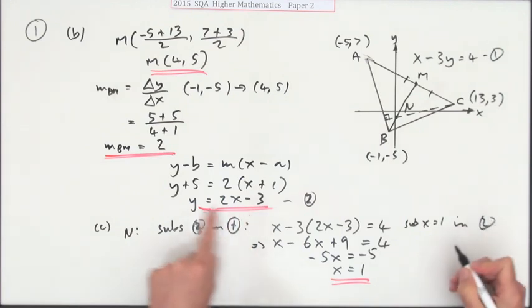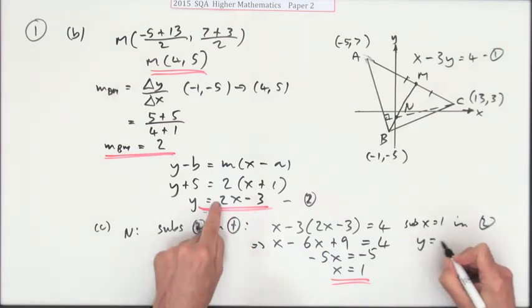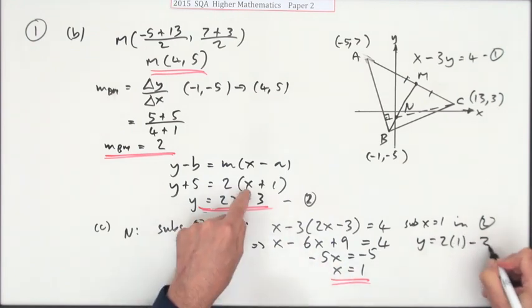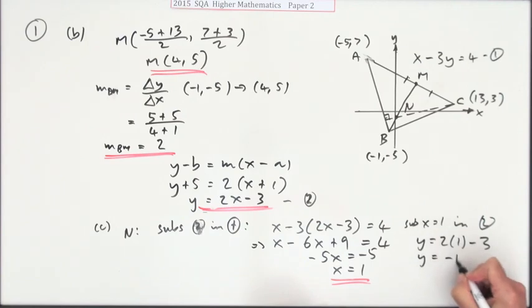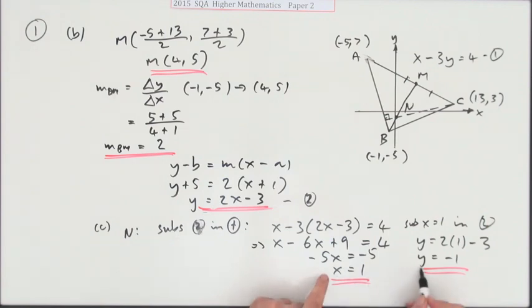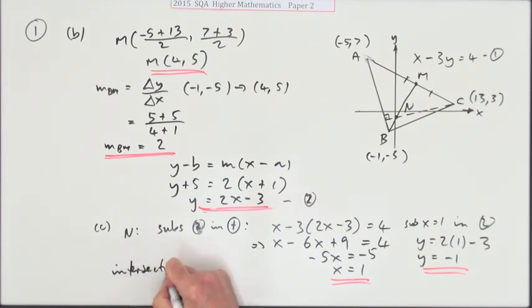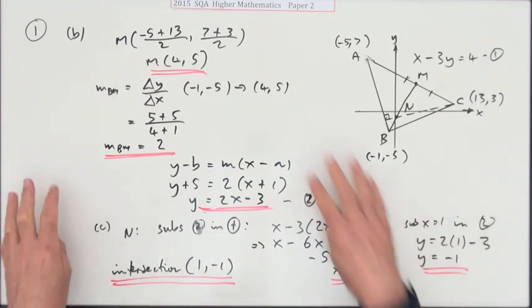Almost there. To find y, just put 1 back into this. Better form here for working out y. You'll have y equals 2 times 1 minus 3. 2 minus 3 is negative 1. It says what's the coordinates? You could argue I've stated them but I'd just like to finish it off. Intersection is (1, -1). Can't really complain about that question.